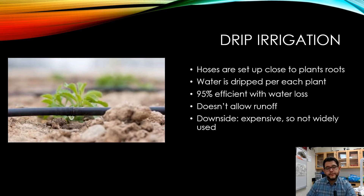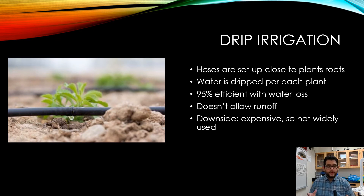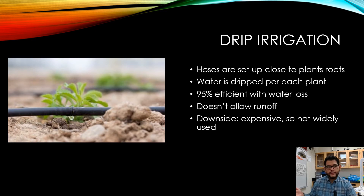Drip irrigation is the most efficient of our options. You set up hoses very close to where the plants are growing and let the water drip only where the plant is. This allows for 95% efficiency — meaning 95% of the water you use goes directly to that plant, with very little runoff into rivers, streams, or lakes, and without carrying away soil or nutrients.